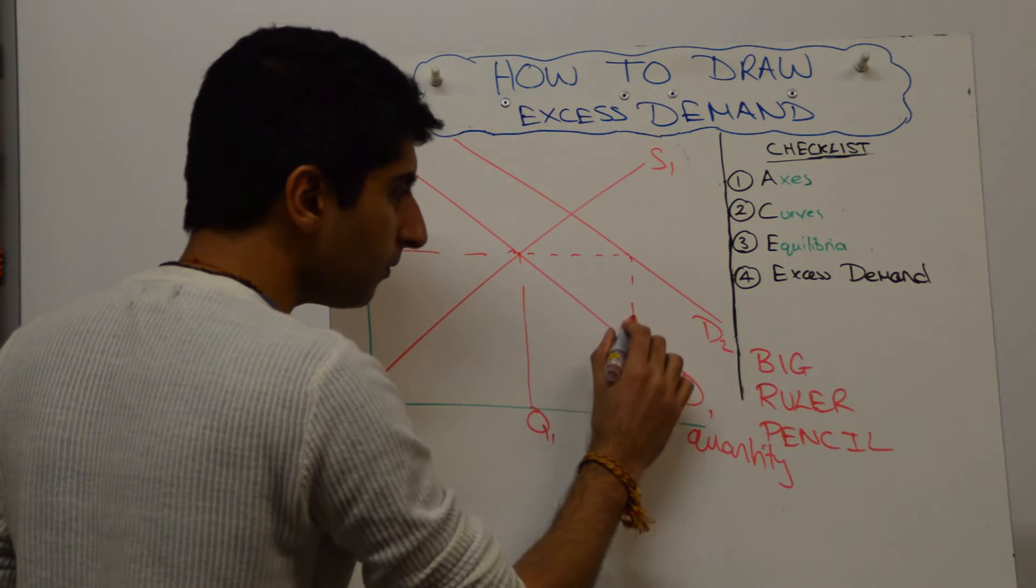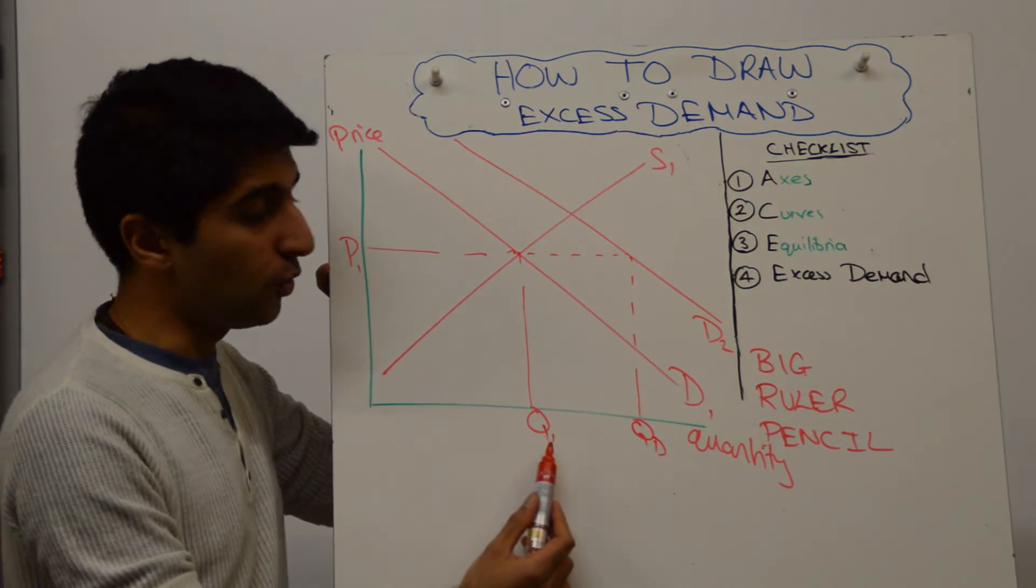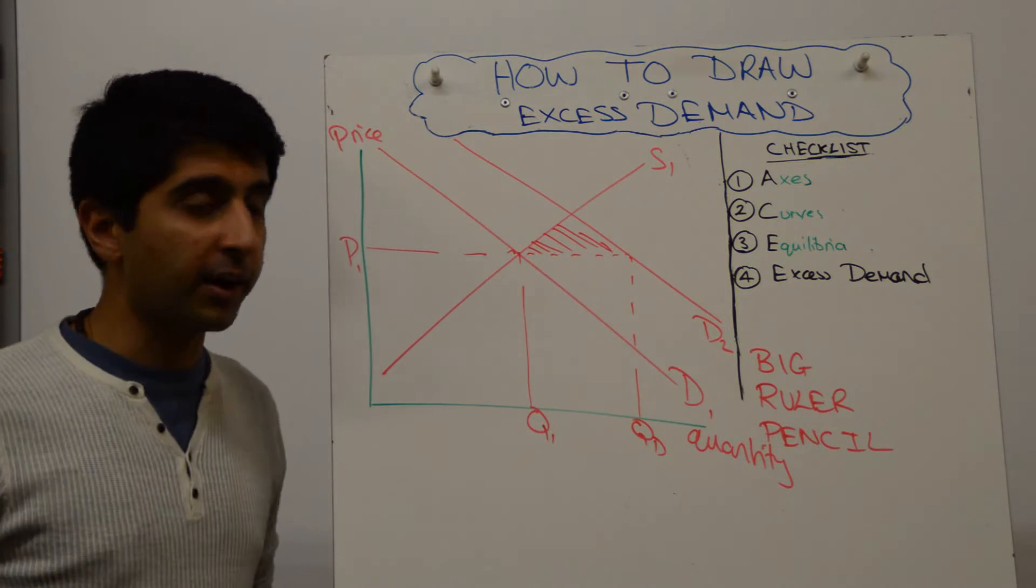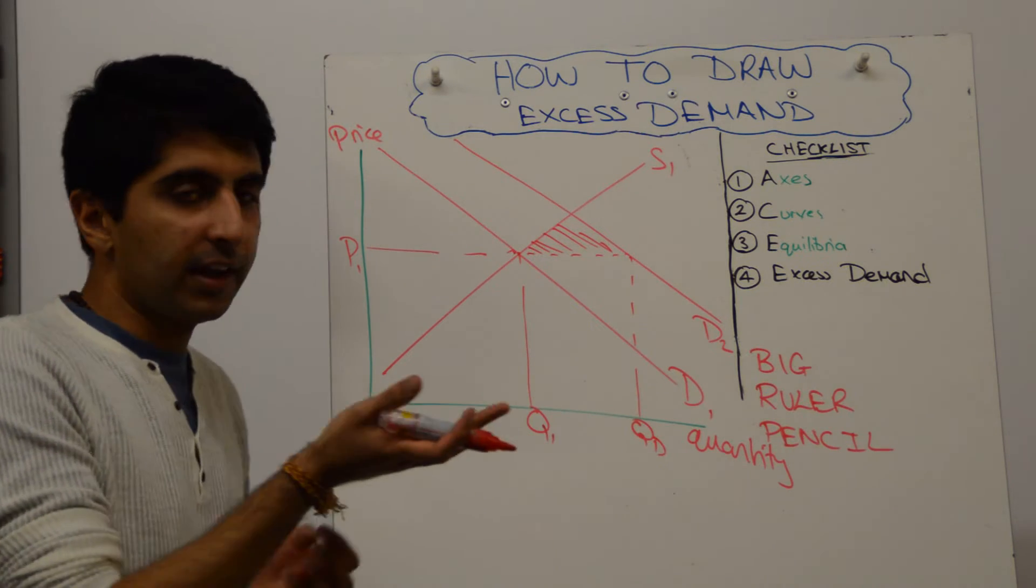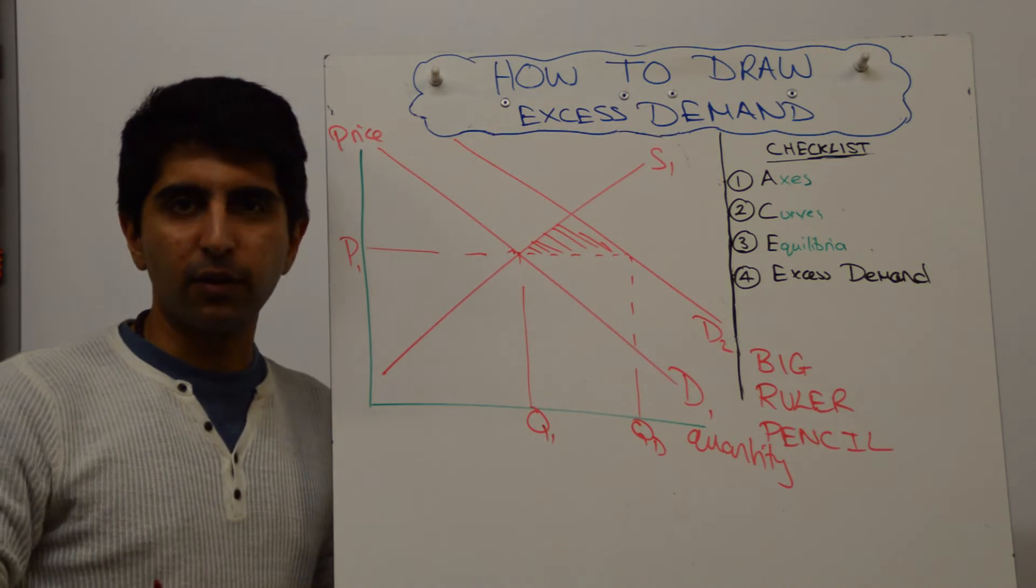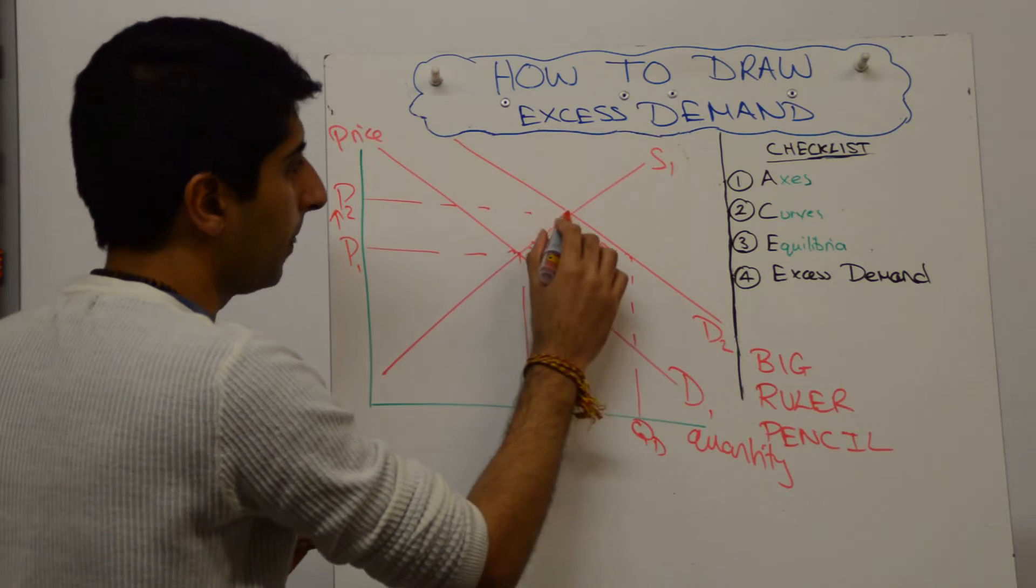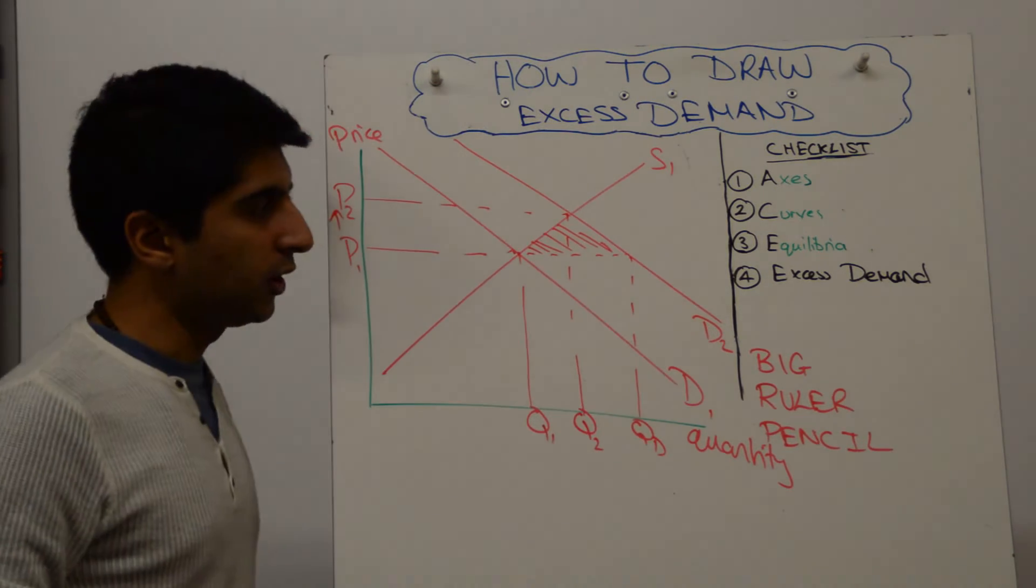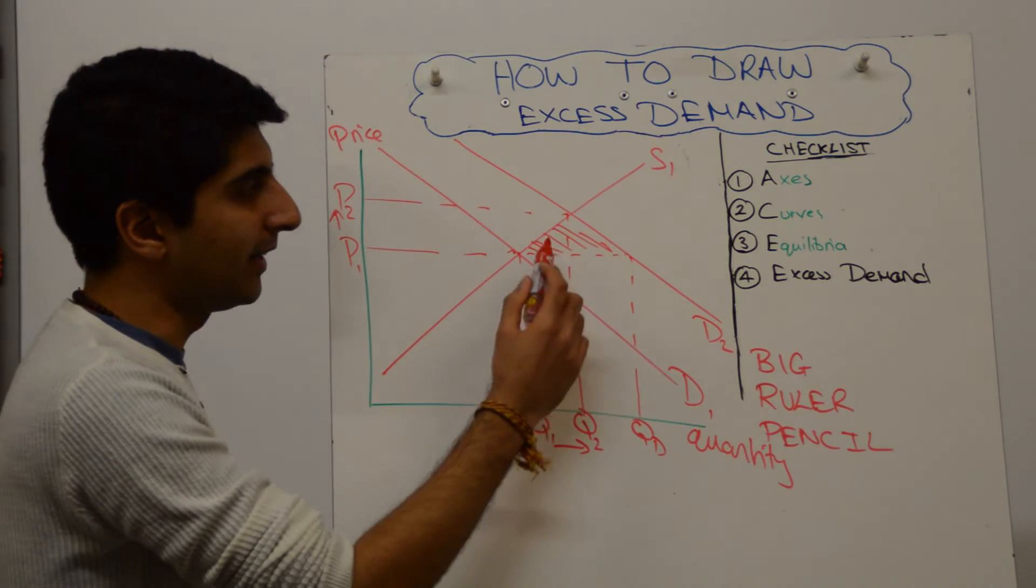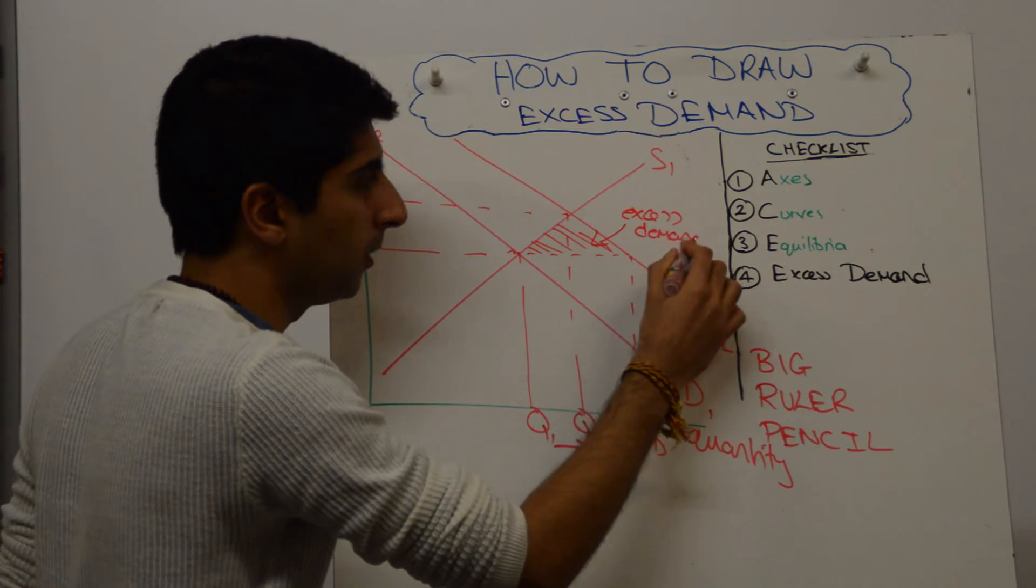So what you could show is, initially at P1, you can say look, supply is at Q1, demand is at QD, and you have an excess demand here. And that needs to be rationed. The way which this is rationed is that eventually producers react to the signal that there are queues for that product, there's a large waiting list. Eventually they raise their price to P2, and they supply Q2, which takes to the new equilibrium. But what you're trying to say is that initially there was this excess demand, which has now been rationed.